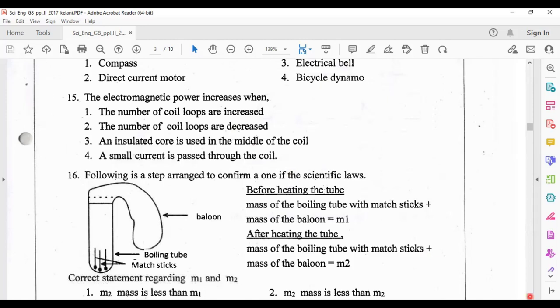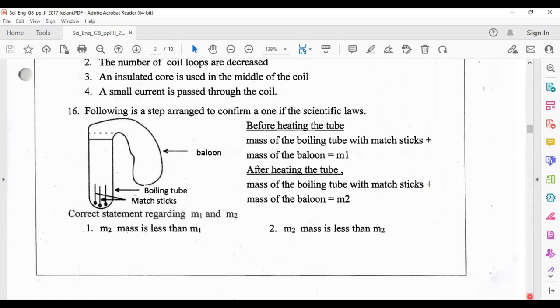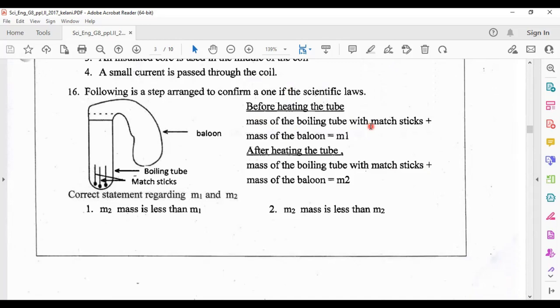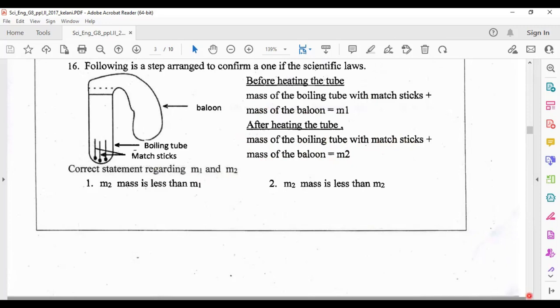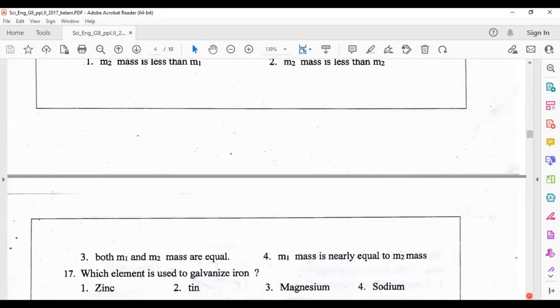Question 16: following is a step arranged to confirm one of the scientific laws. Before heating the tube, the mass of the boiling tube with matchsticks and plus mass of the balloon is M1. After heating, mass of the boiling tube with matchsticks and mass of the balloon is M2. Correct statement regarding M1 and M2 is answer number three: both M1 and M2 masses are equal. The reason for that is the law of conservation of mass, that means during chemical reactions the total mass does not change because this is a closed system.